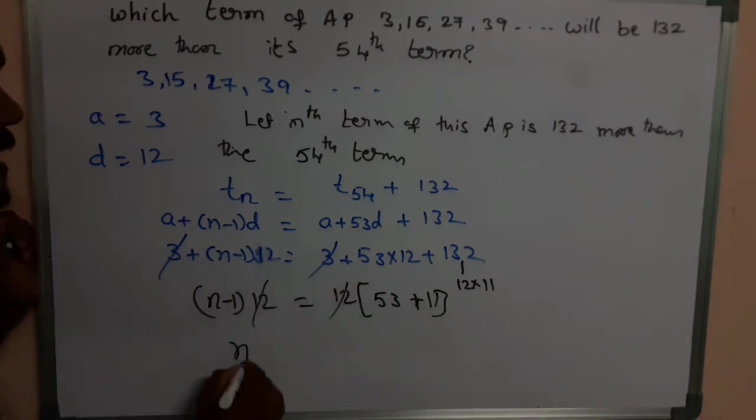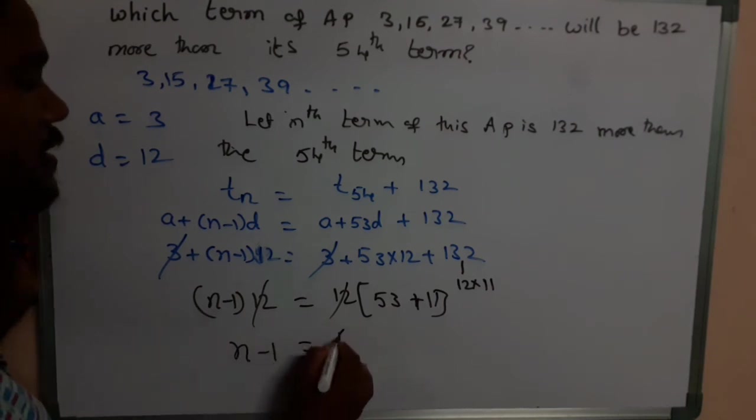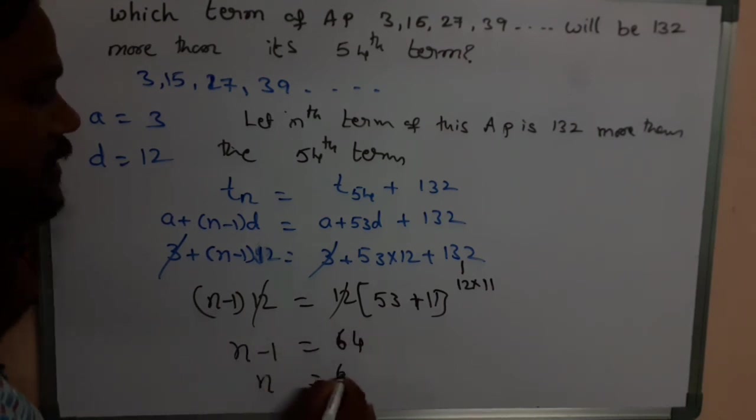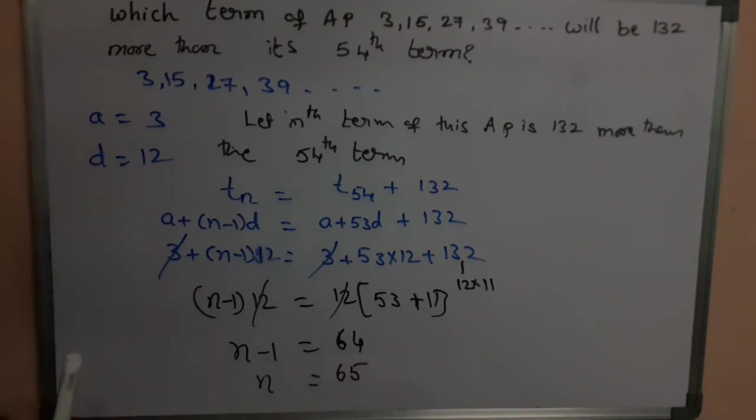Then you get it as n minus 1 is equal to 64. From this, n is equal to 65. That means the 65th term of this AP. Thanks for watching, please subscribe my channel.